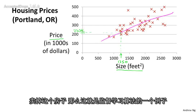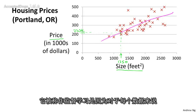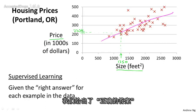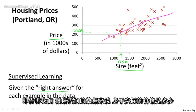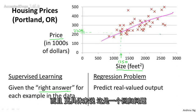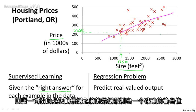So this is an example of a supervised learning algorithm. It's supervised learning because we're given the right answer for each of our examples — mainly, we're told what was the actual price that each of the houses in our data set was sold for. Moreover, this is an example of a regression problem, where the term regression refers to the fact that we're predicting a real-valued output, like the price.